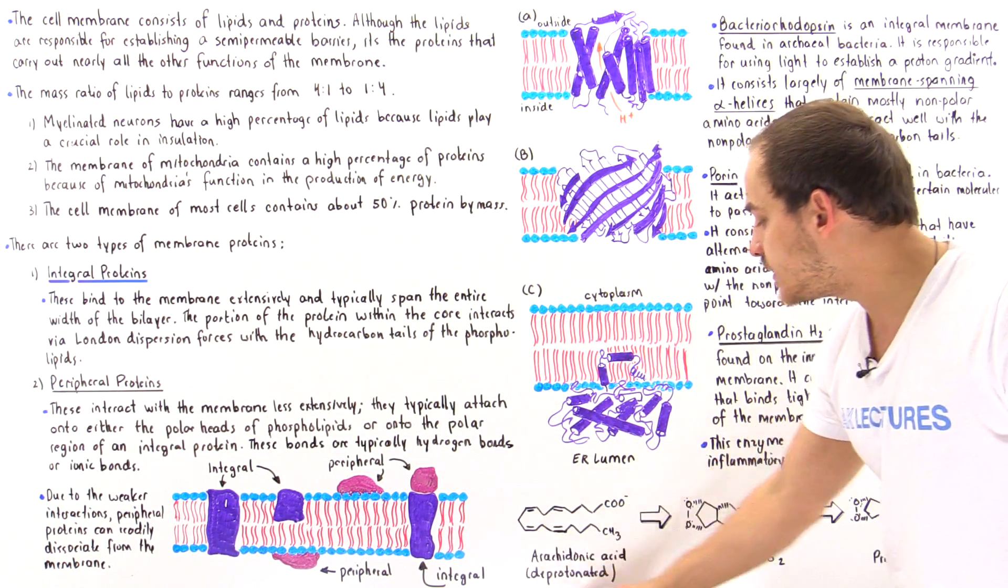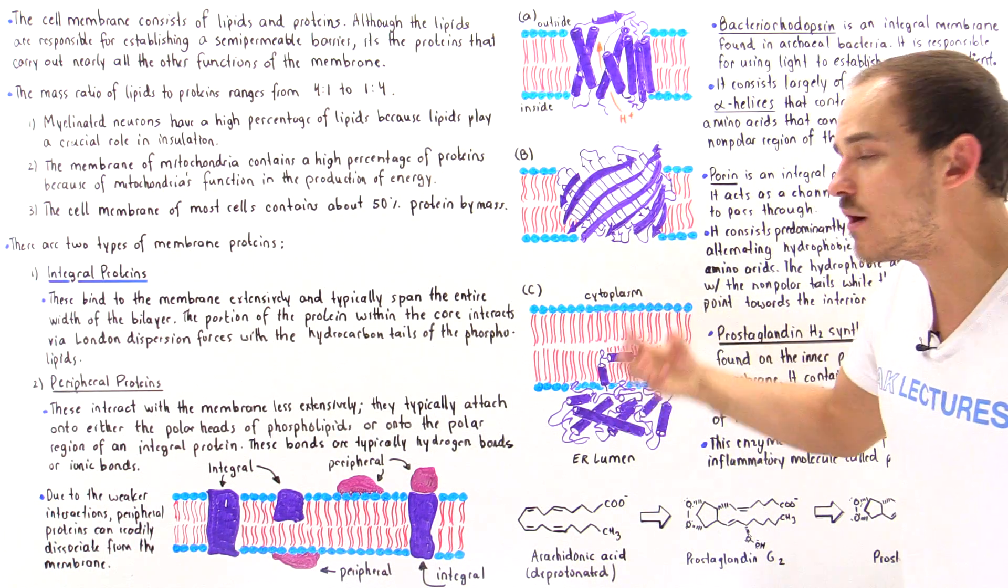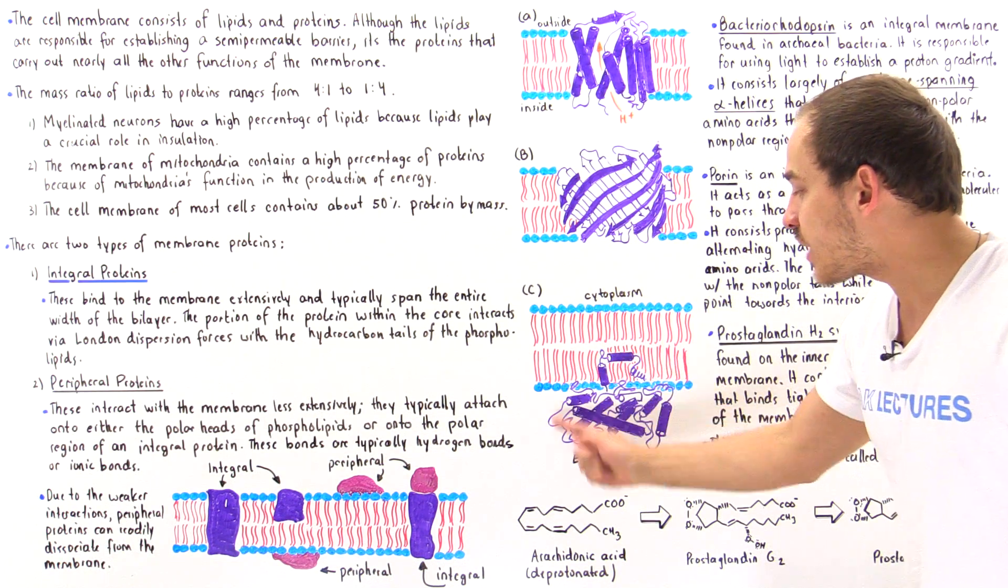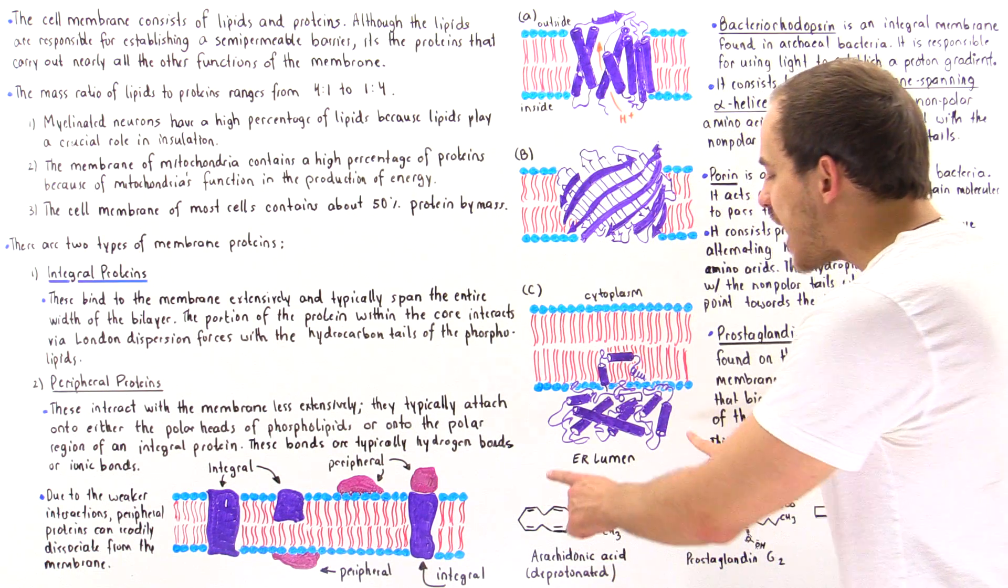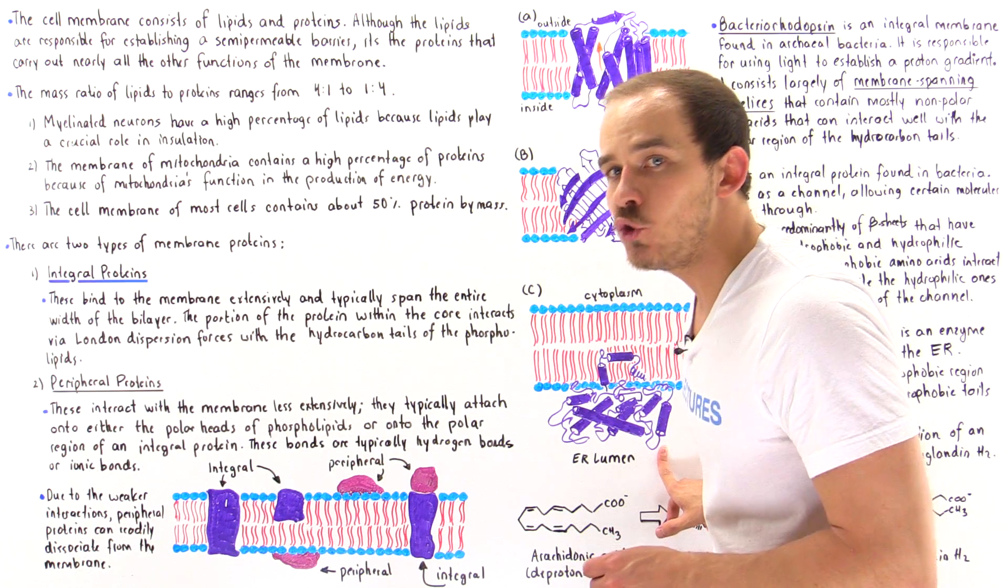What it does, this arachidonic acid is found within the hydrophobic region of the membrane. It moves into the active site of this enzyme without actually having to interact with the aqueous environment of the ER lumen.